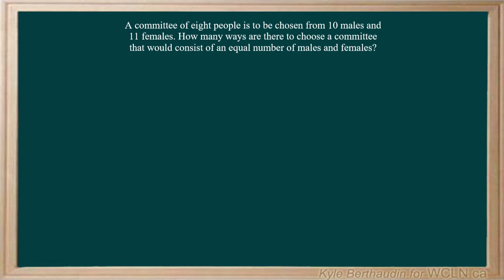A committee of 8 people is to be chosen from 10 males and 11 females. How many different ways are there to choose a committee that consists of an equal number of males and females?